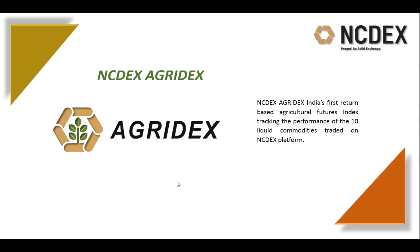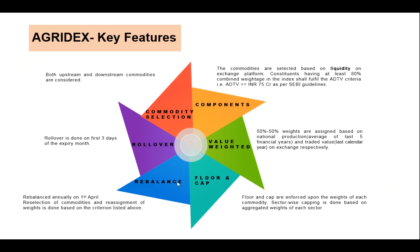Let's talk a little bit about indexes. Essentially an index is the combination of ten or more than one kind of component. Like in equity, they are Nifty, Bank Nifty, or Sensex — they are not just individual stocks. They are the combination of underlying 30 stocks in Sensex's case and 50 stocks in Nifty's case. So essentially it's a basket — a basket of stocks or commodities. In our case, it's agriculture futures that are the underlying.